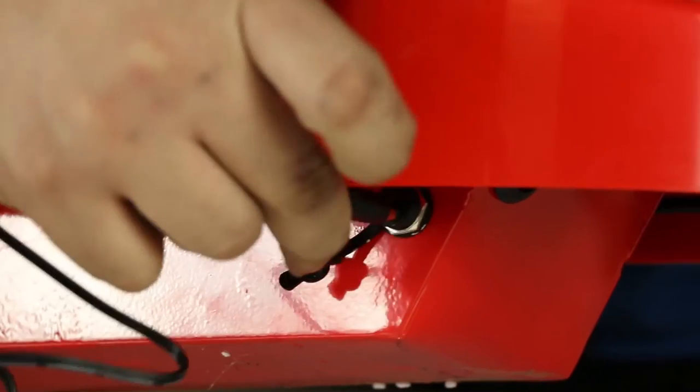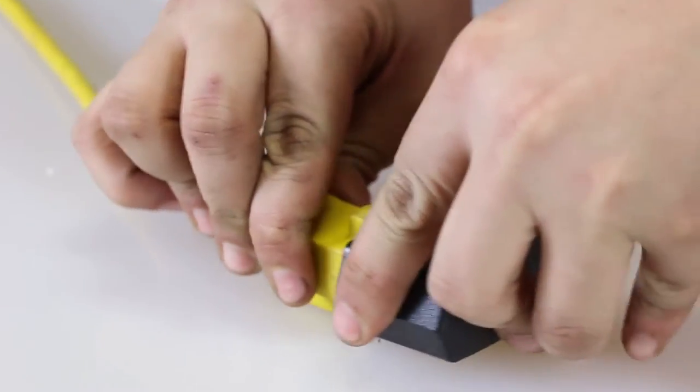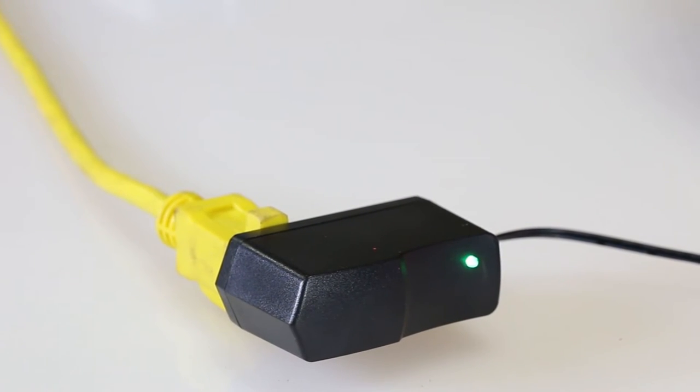To charge your scooter, plug the charger into the port and the other end into a 110 volt outlet. A red light means the battery is charging. Green means the battery is fully charged.